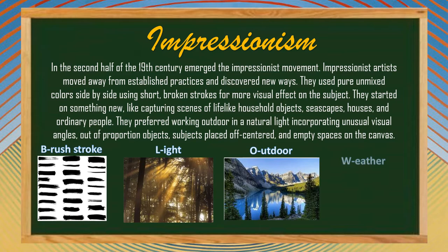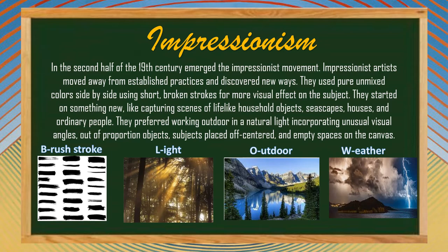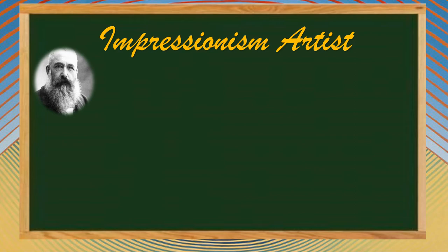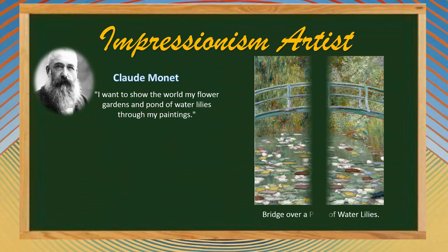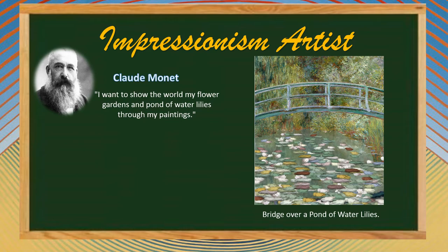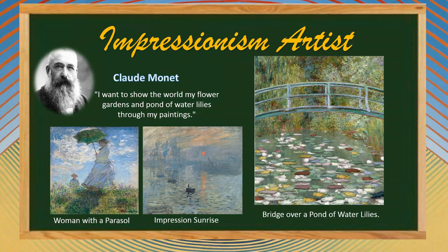Impressionists favored outdoor scenery and paintings depicting various types of weather. Among the artists under Impressionism, Claude Monet was a famous French painter whose work gave the name to the movement. He was concerned with capturing light and natural forms. His paintings focus on natural sceneries and outdoors, such as the Bridge Over a Pond of Water Lilies, Impression Sunrise, and Woman with a Parasol.